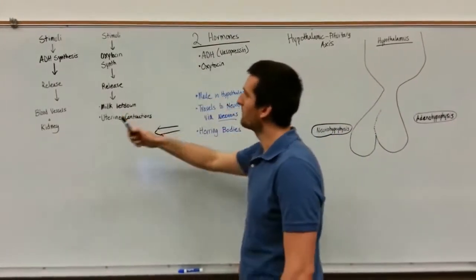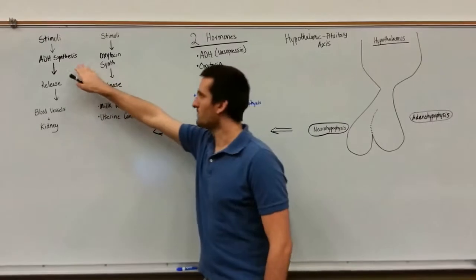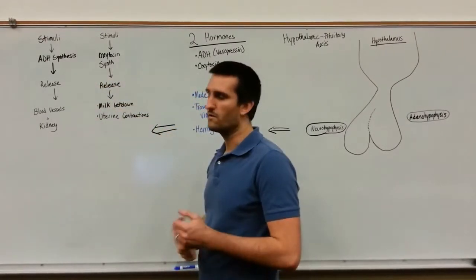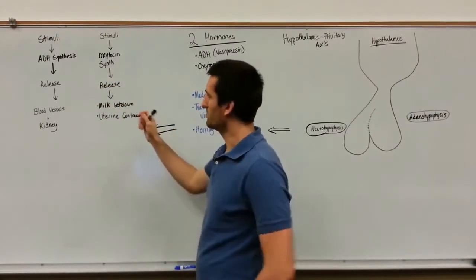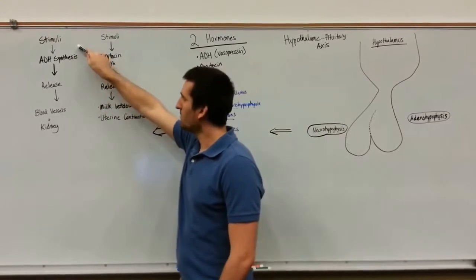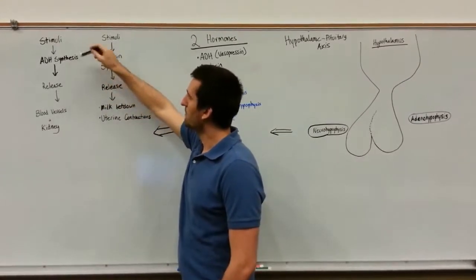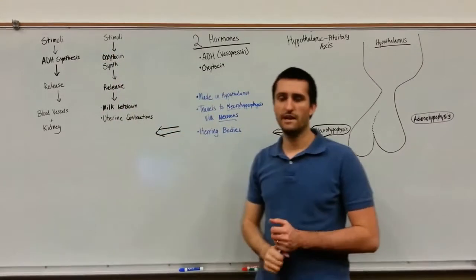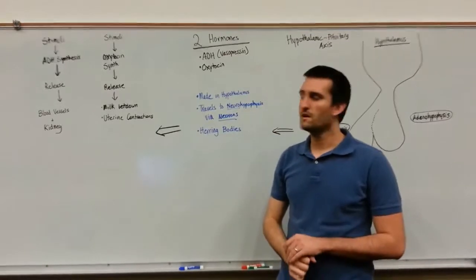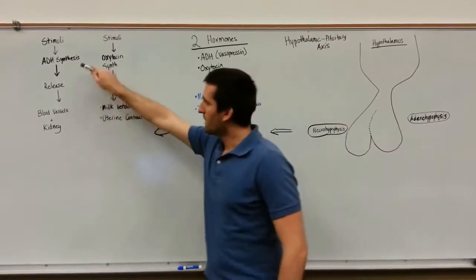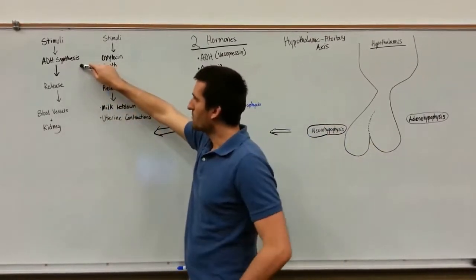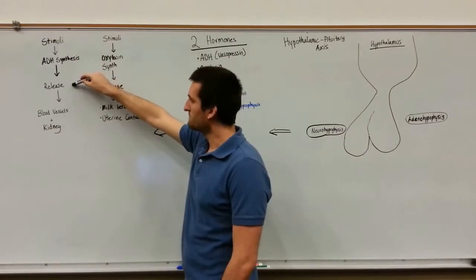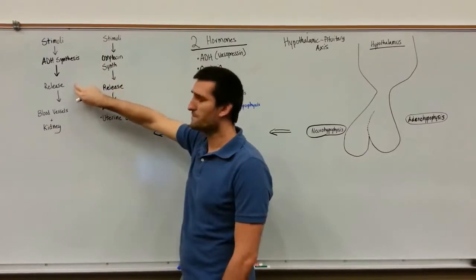The first hormone we're going to take a look at is antidiuretic hormone, also known as vasopressin. A stimulus will trigger the hypothalamus to make the antidiuretic hormone. Then the antidiuretic hormone will travel down into the herring bodies and wait for release.